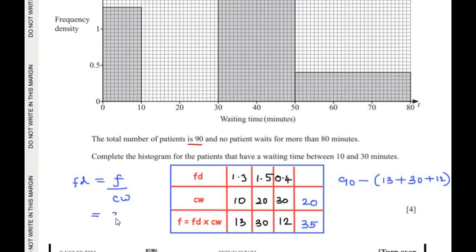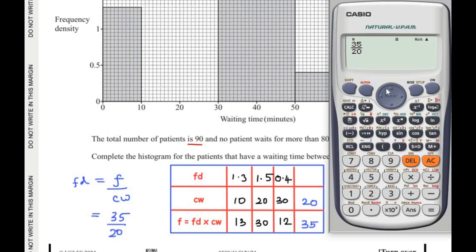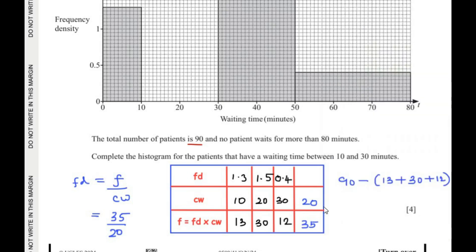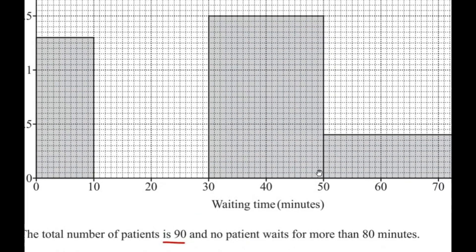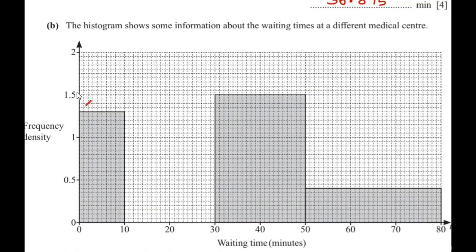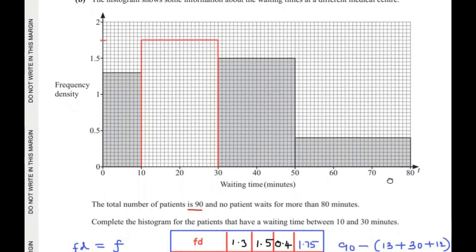35 divided by 20 gives a frequency density of 1.75. On the histogram, we draw a rectangle between 10 and 30 minutes with a height of 1.75. Reading the scale: 1.5, 1.6, 1.7 — so 1.75 falls halfway between 1.7 and 1.8. This completes the histogram.